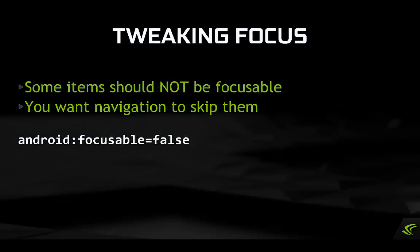In some cases, you may find that you end up stopping on invisible items, or items that you never intended to be a part of the focus-based UI. We often see these bugs filed by QA as 'have to press down three times to move,' or something like that. You can remove these from navigation by setting the element's focusable property to false. This is possible in both Android Studio and by editing the XML directly.